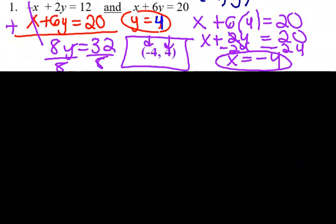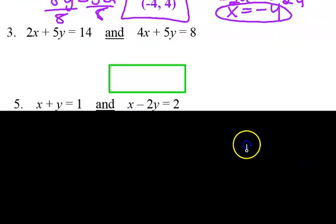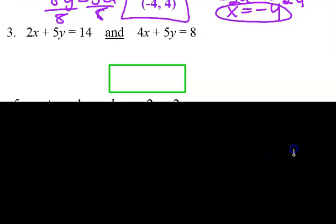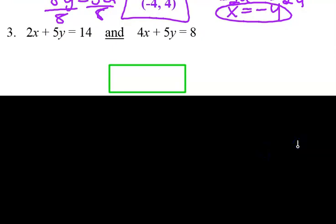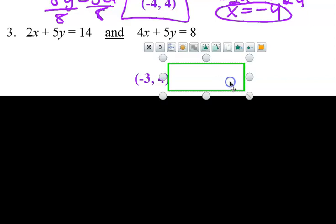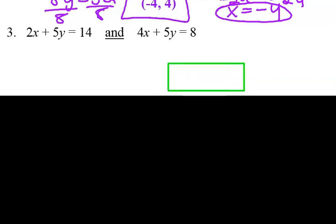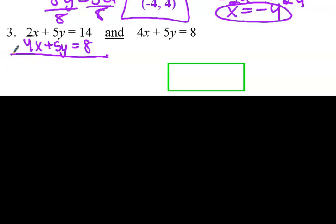Let's try number 3, showing those steps so we can rock this out. First thing I'm going to do is stack them. So I'm going to put 4x plus 5y equals 8 under the first one. The reason why I'm stacking is because I'm going to be adding them together. If you notice, I can't eliminate anything just yet.